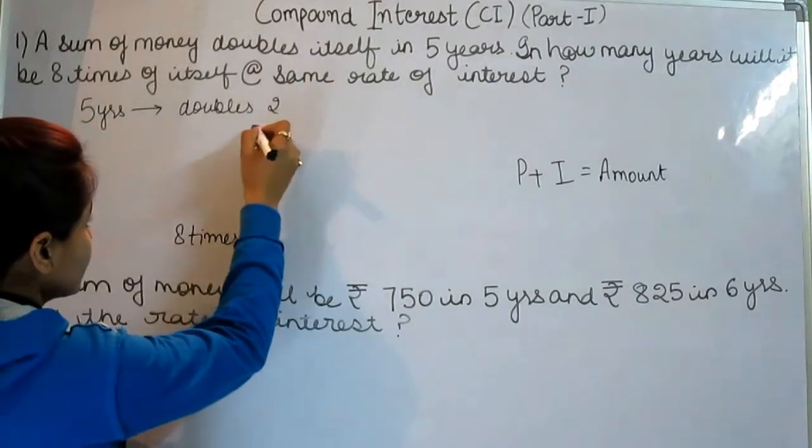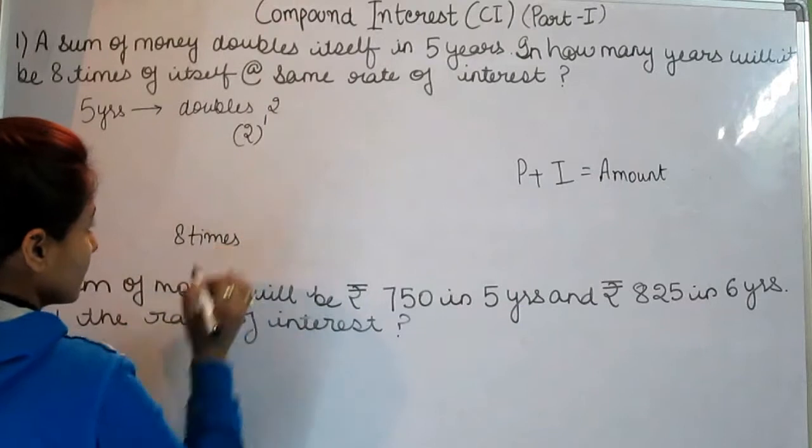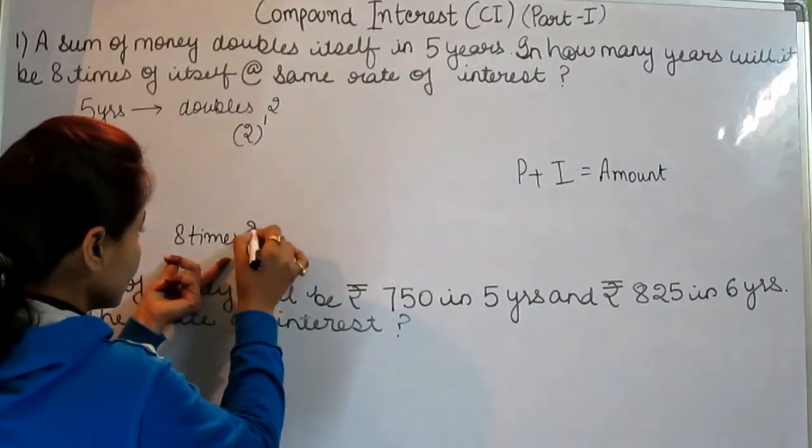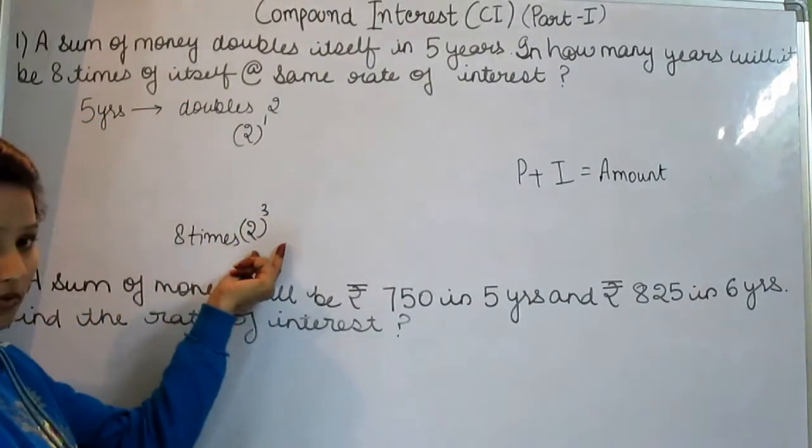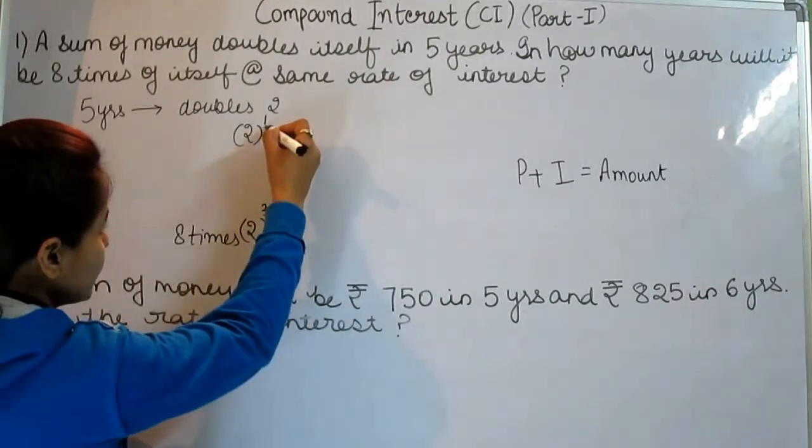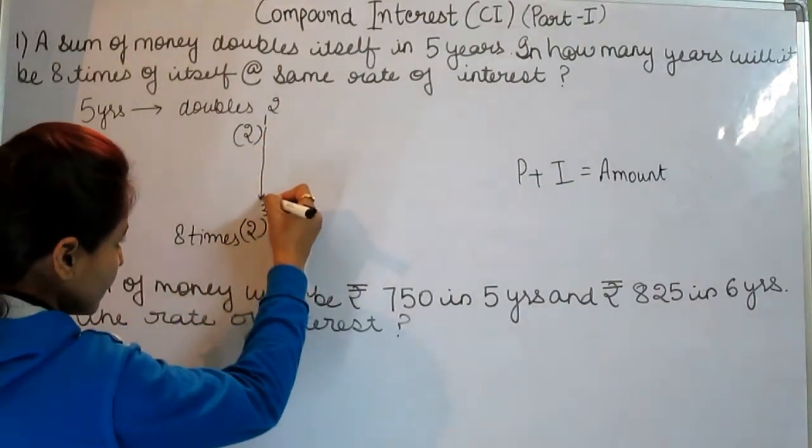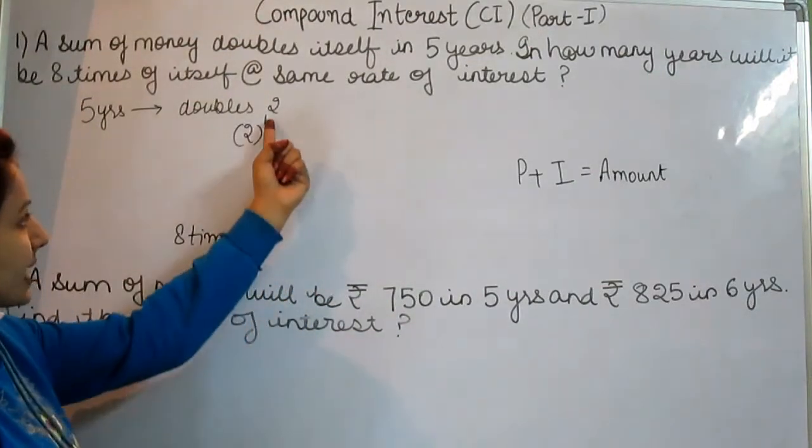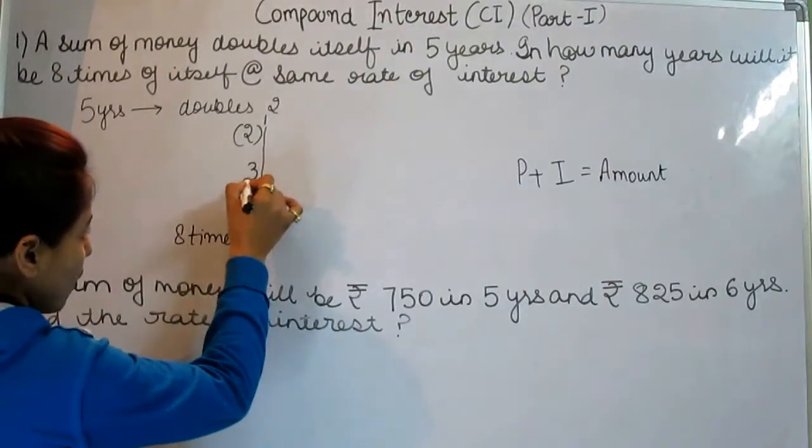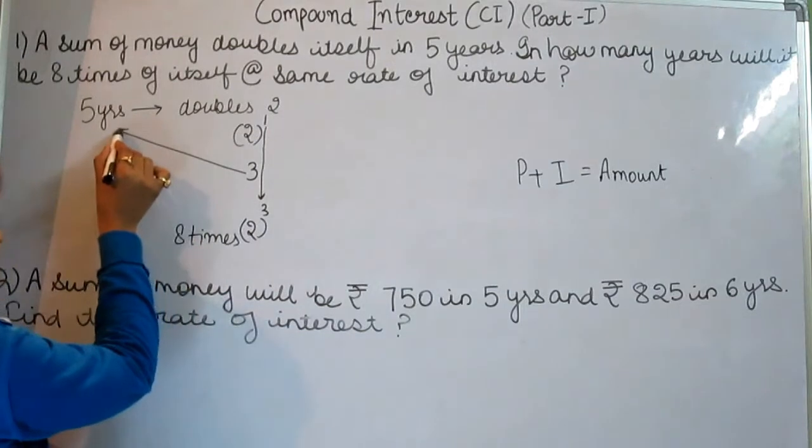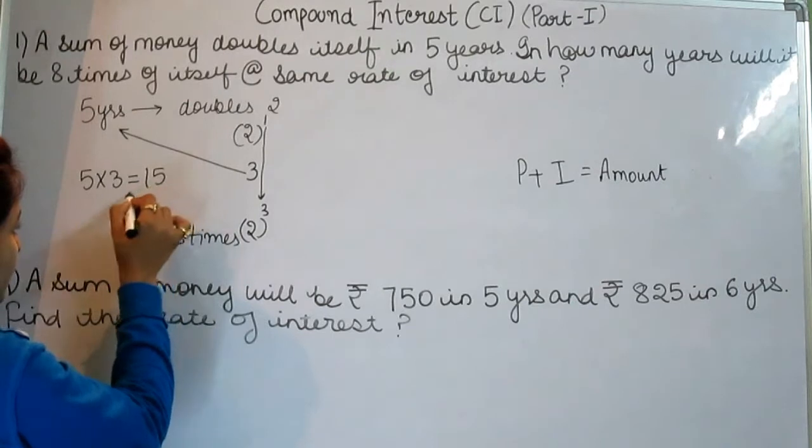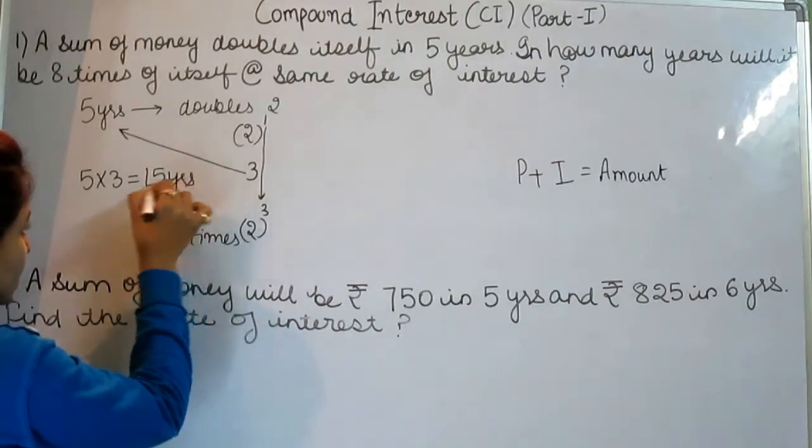And this 2 we can write this way, and this 8 we can write this way. We can write 8 this way also. Now see the gap. 3 is 3 times of 1. So now multiply this 3 with 5 and we get 15.